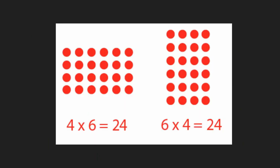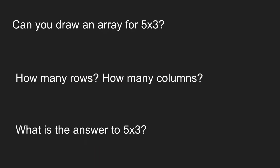This illustration shows how an array can be flipped. 4 times 6 equals 24 or 6 times 4 equals 24. There are the same number of dots in both arrays.